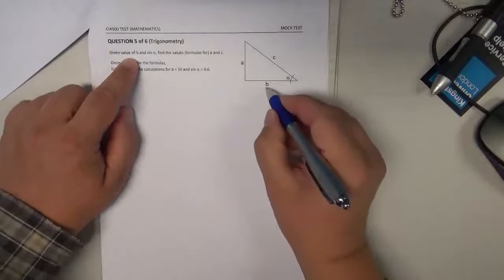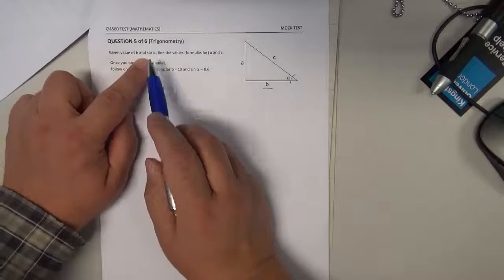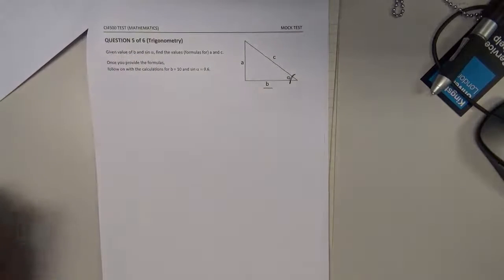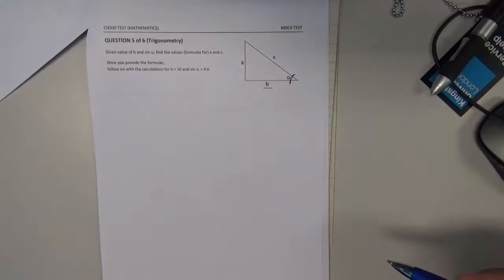Given value of b, so this is something we know, and sine alpha, so this is the sine of this angle is also something that we know. Find the values, in this case formulas for a and c. Why it specifically asks for formulas, because I would prefer you to start with symbolic mathematics, symbolic calculation, not starting already with numbers.